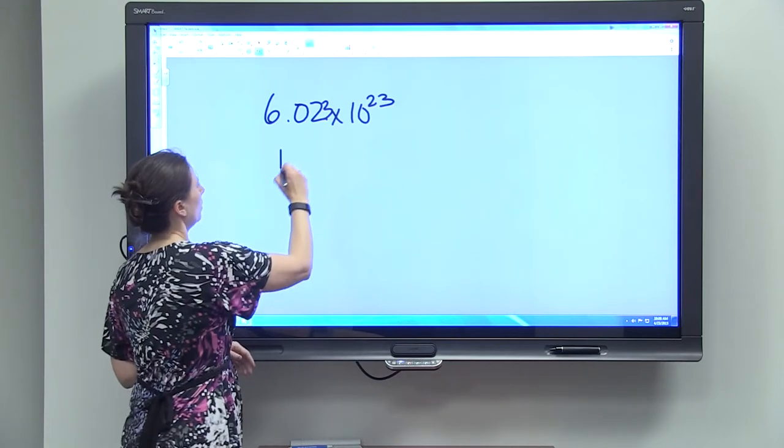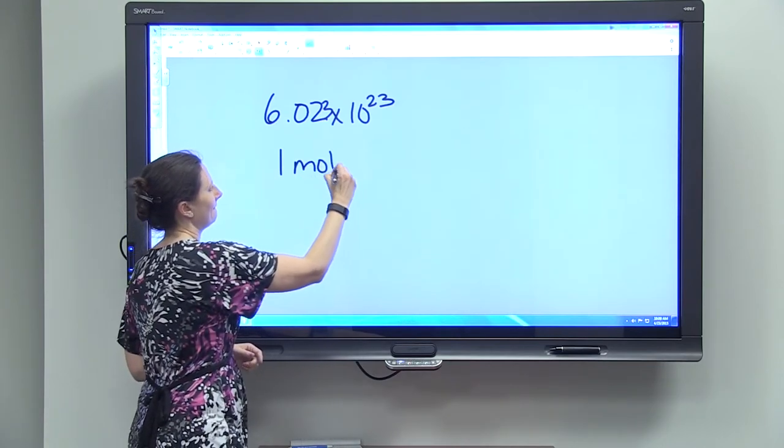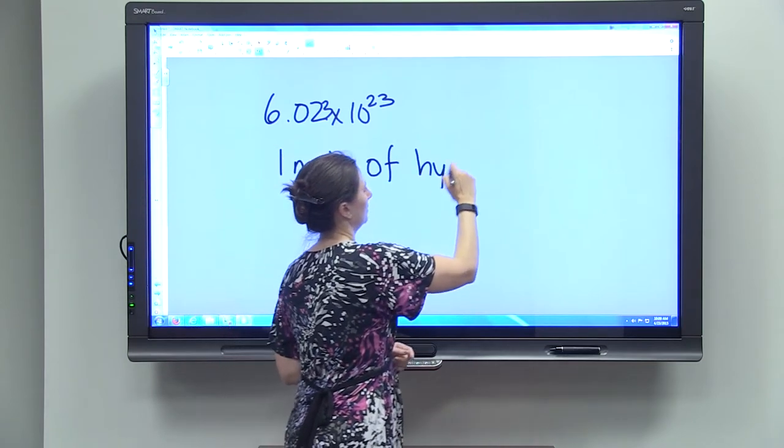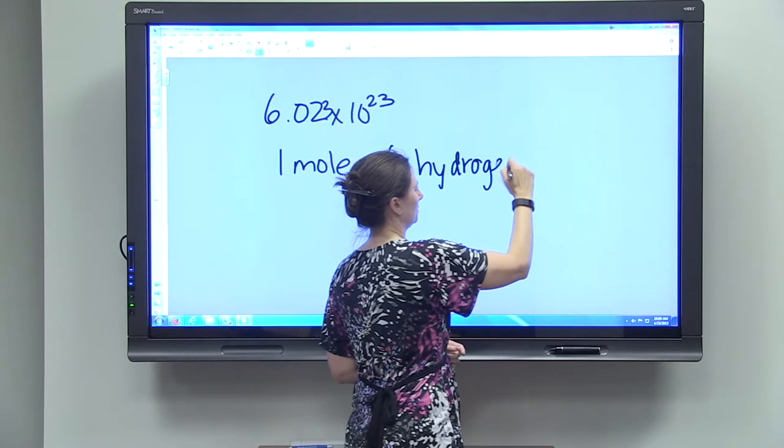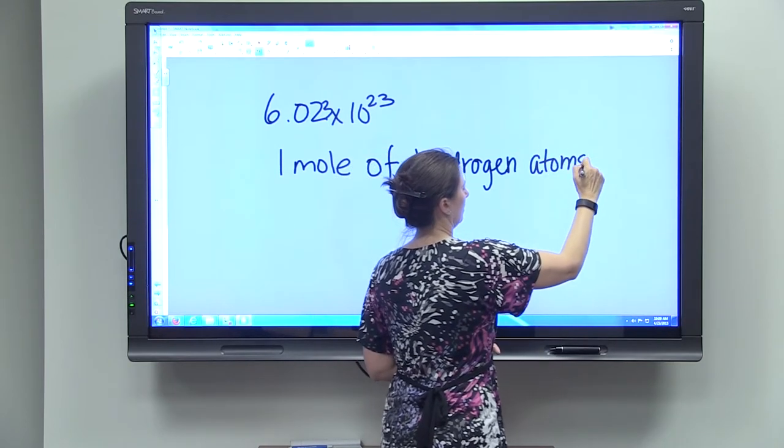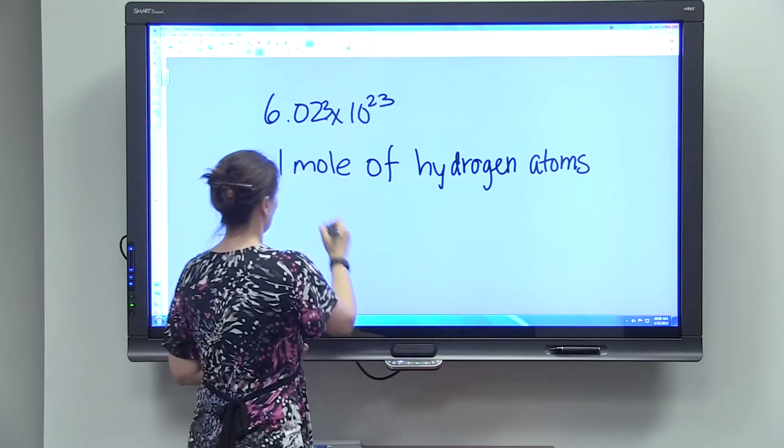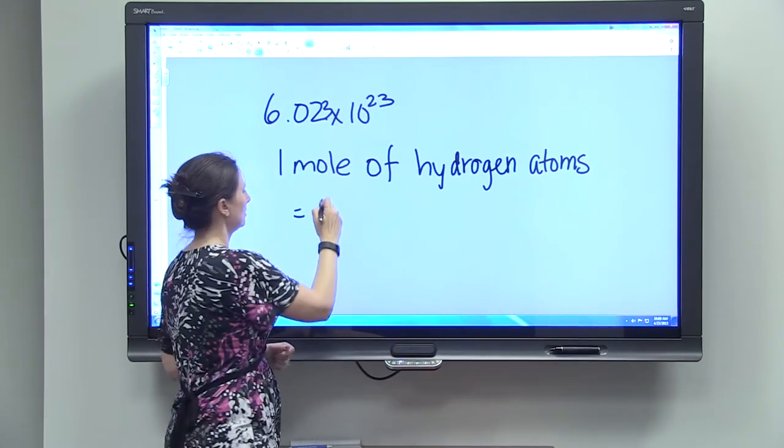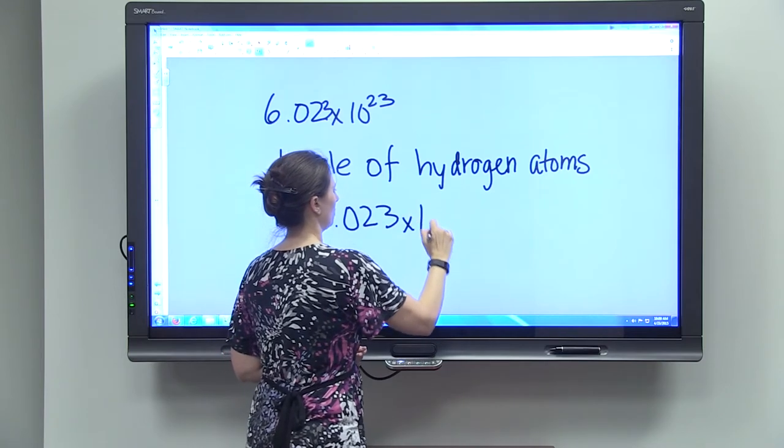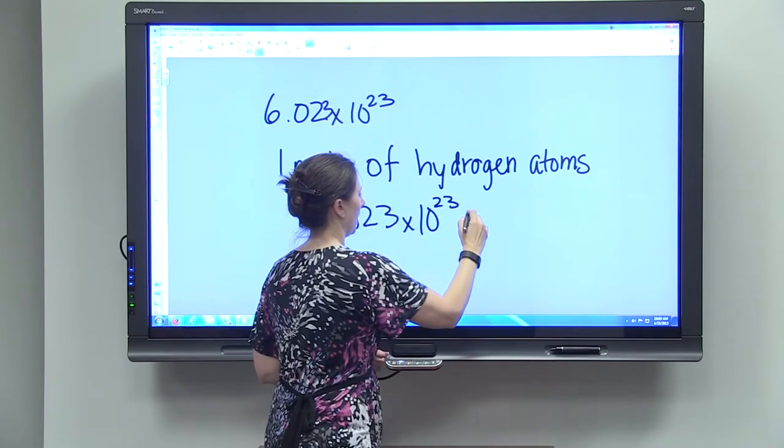So one mole of hydrogen atoms, for example, is equal to 6.023 times 10 to the 23rd hydrogen atoms.